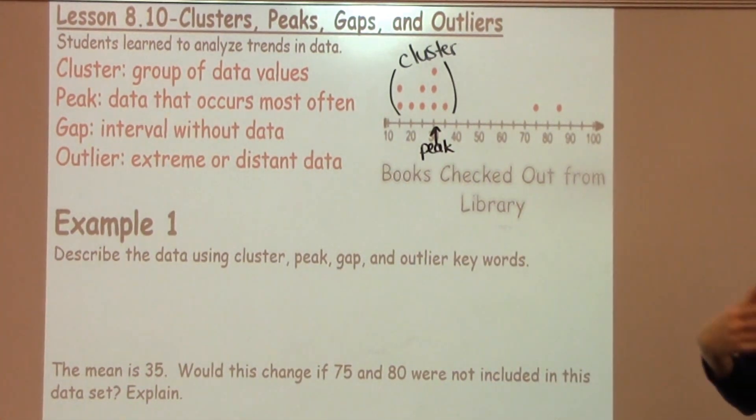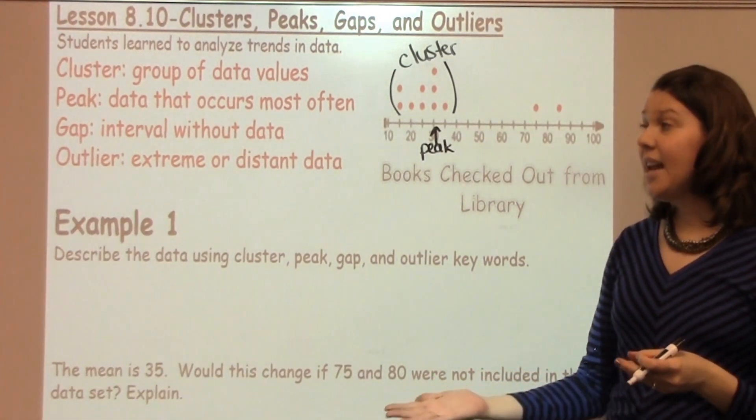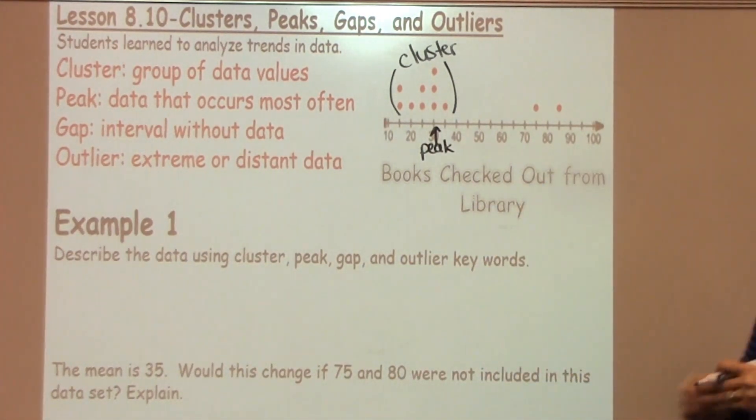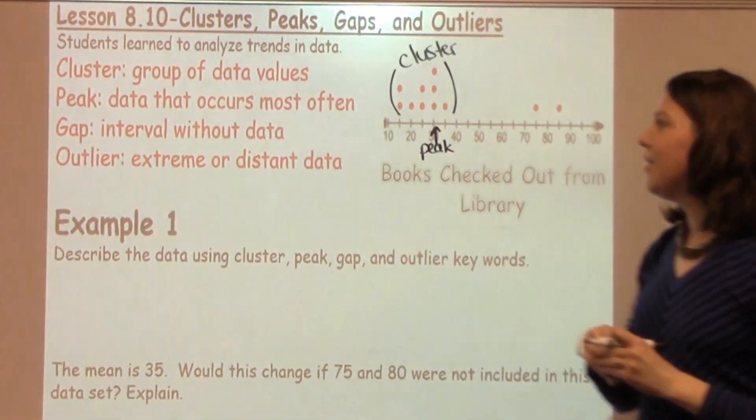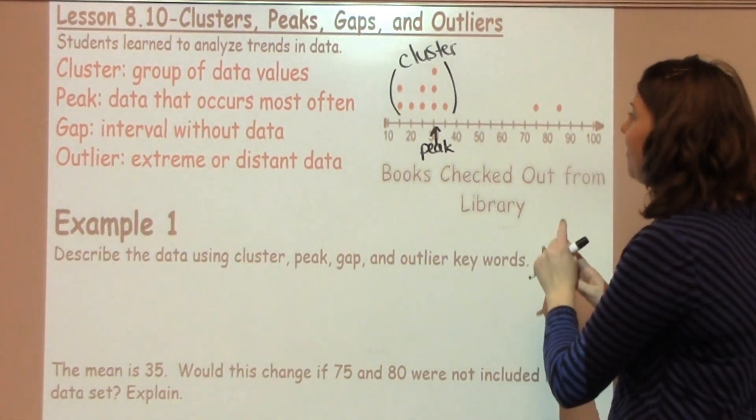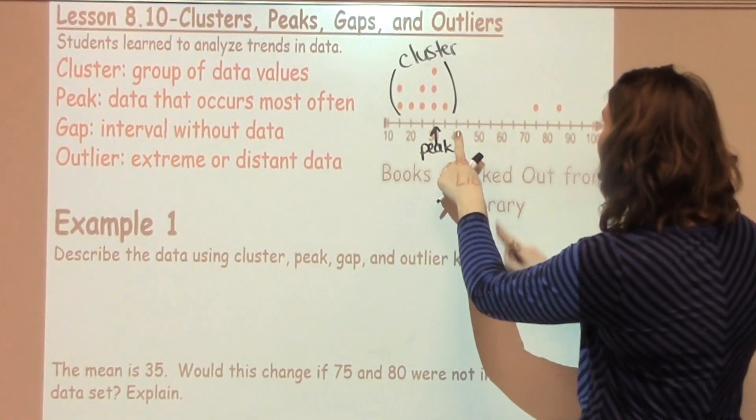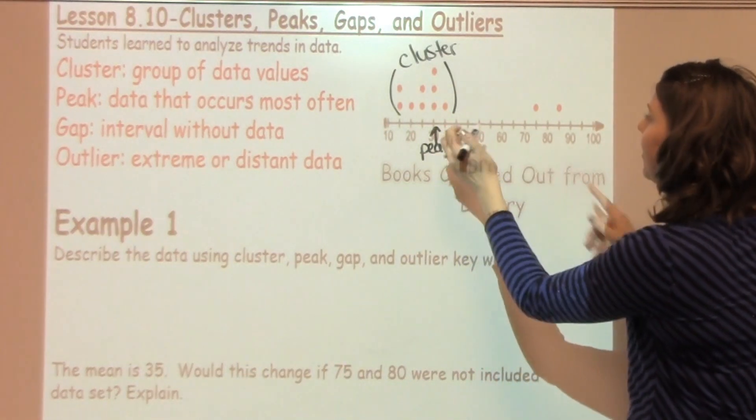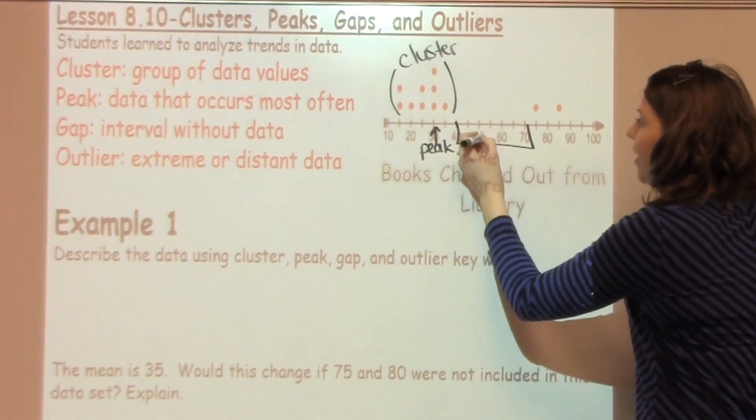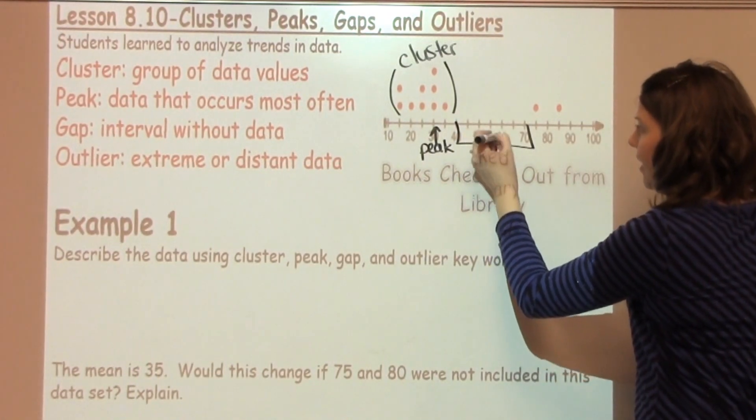Now, I need to look for a gap. In some cases, there may not be a gap in the data, but in this case, we can definitely see there's an interval without data. So looking at this, we've got some spots where we go from about 40 to around 70 where there is a gap in the data.